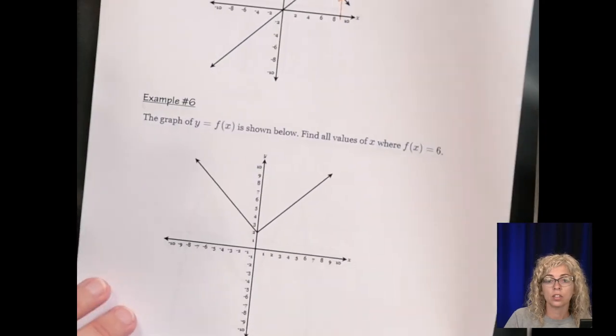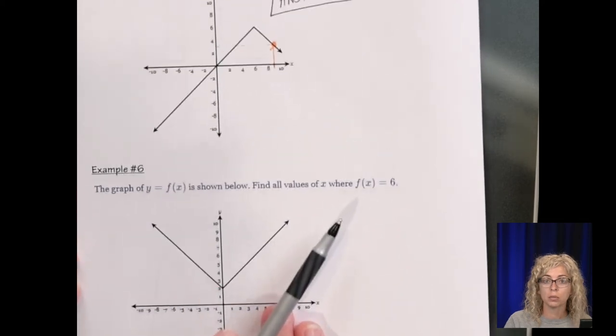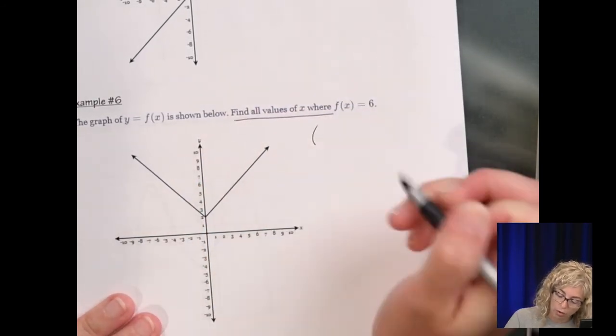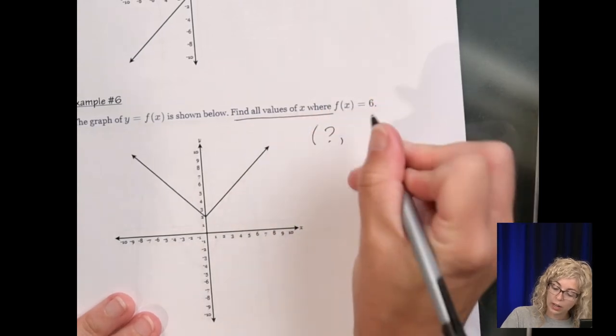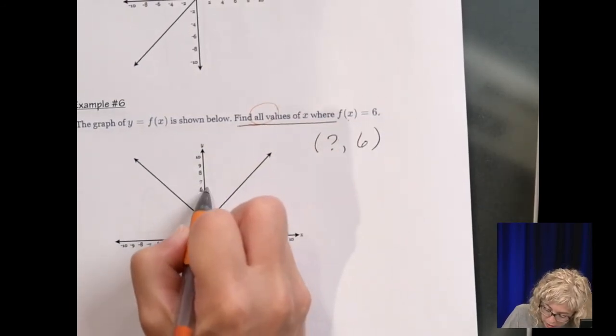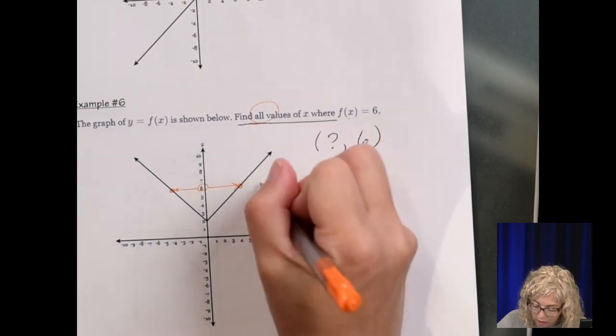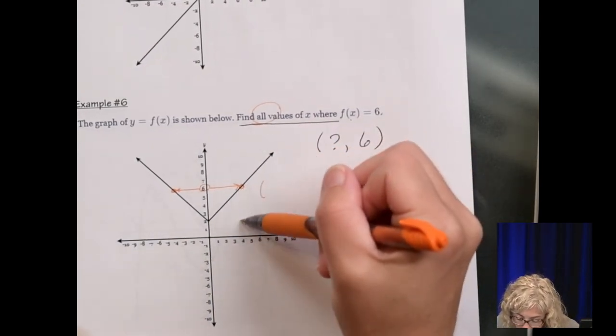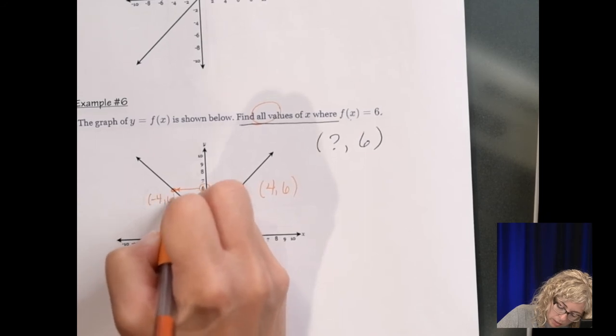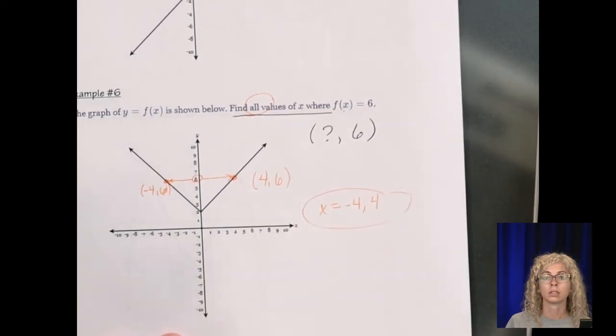So then down here, when they say, here's the graph of y equals f of x. So here's some function. And this is also the absolute value. This was the absolute value function. Just a negative, because it's upside down, where this was a positive. So here we want to find the value of x. So we want the point where the y is 6. Now it says all values. So if we go where y is 6, which is right here, and we go right, we get this point. And we go left, we get this point. So there's two points that have a y value of 6. So following this straight down. This is 4, 6. And this is negative 4, 6. So find all values of x. We have x equals negative 4 and 4.